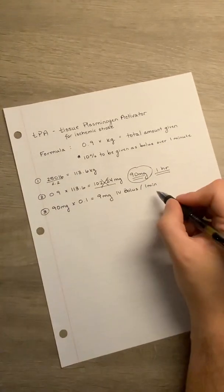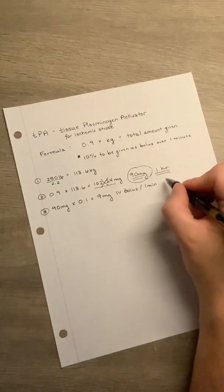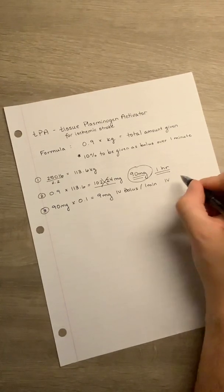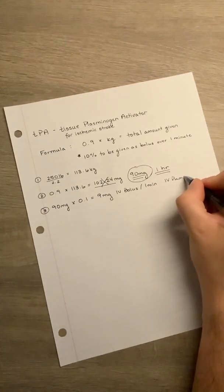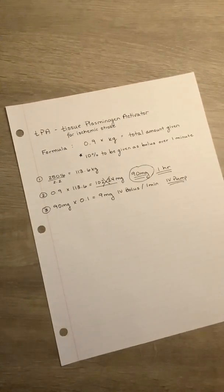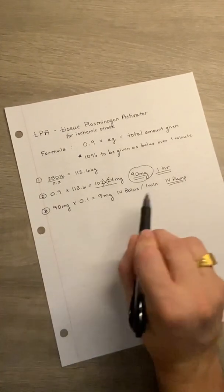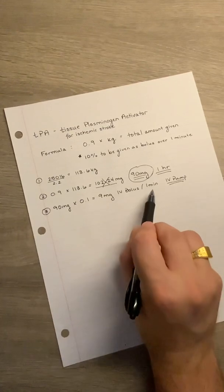It's important to remember that all medications using TPA must be given with a pump. So now we have our 9 milligrams. It's going to go over as a bolus over one minute.